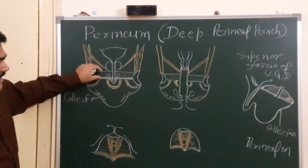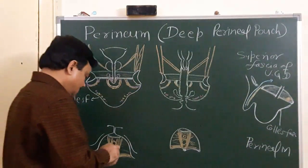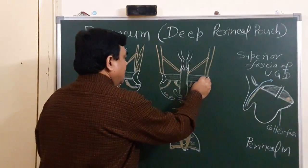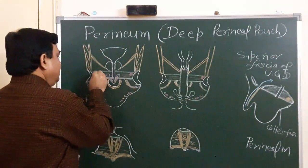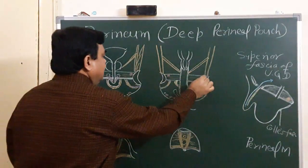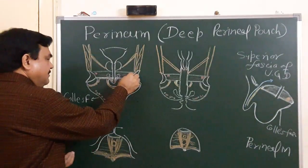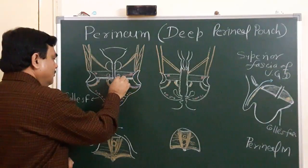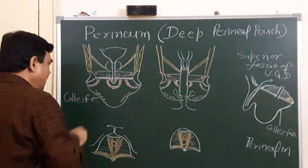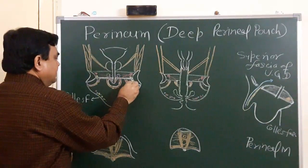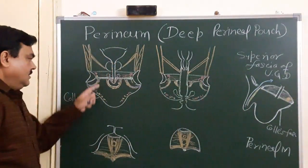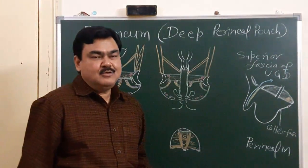Another content of the deep perineal pouch is vessels. Here is the artery — the artery to the clitoris in the case of female, and the artery to the penis in the case of male. It gives numerous branches: muscular branches, artery to the bulb, and artery to the crus. Also here is the pudendal nerve, which gives muscular branches to these muscles. So these are the contents of the deep perineal pouch.